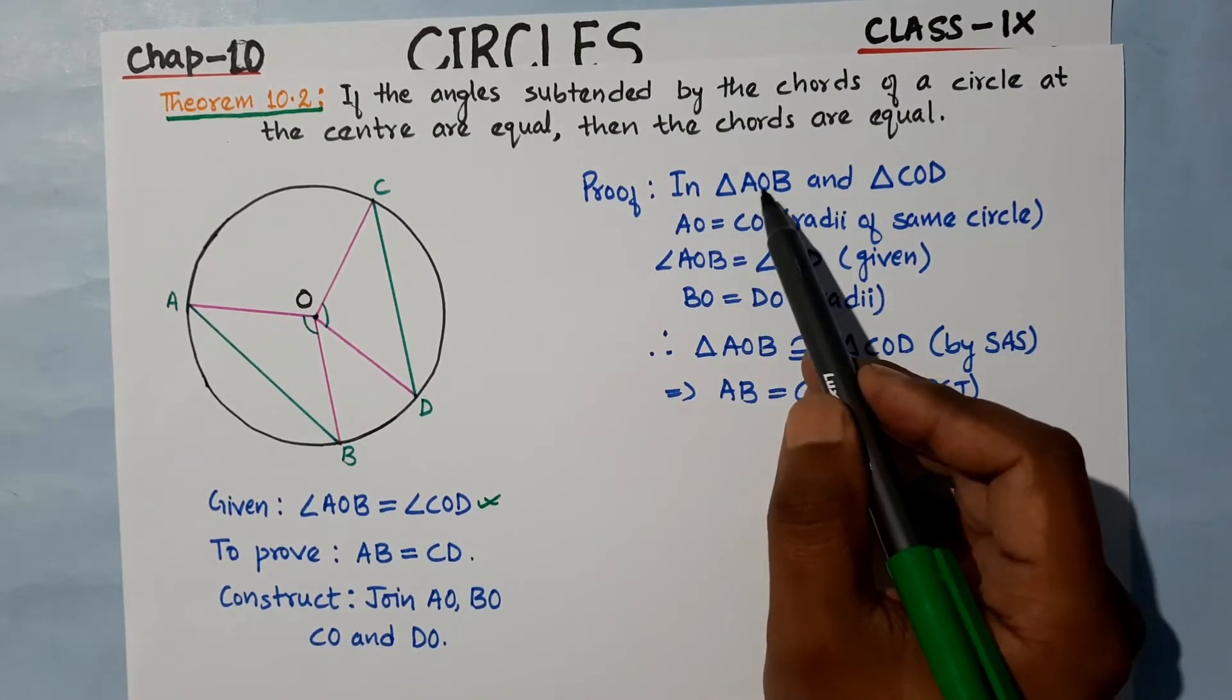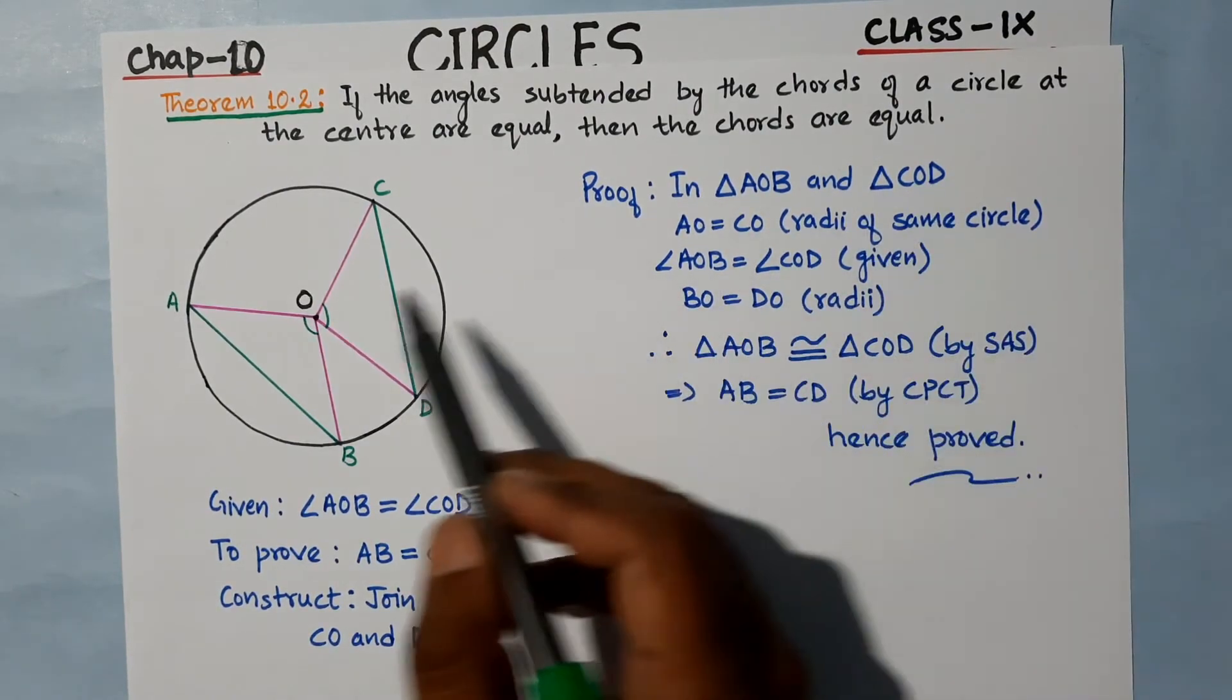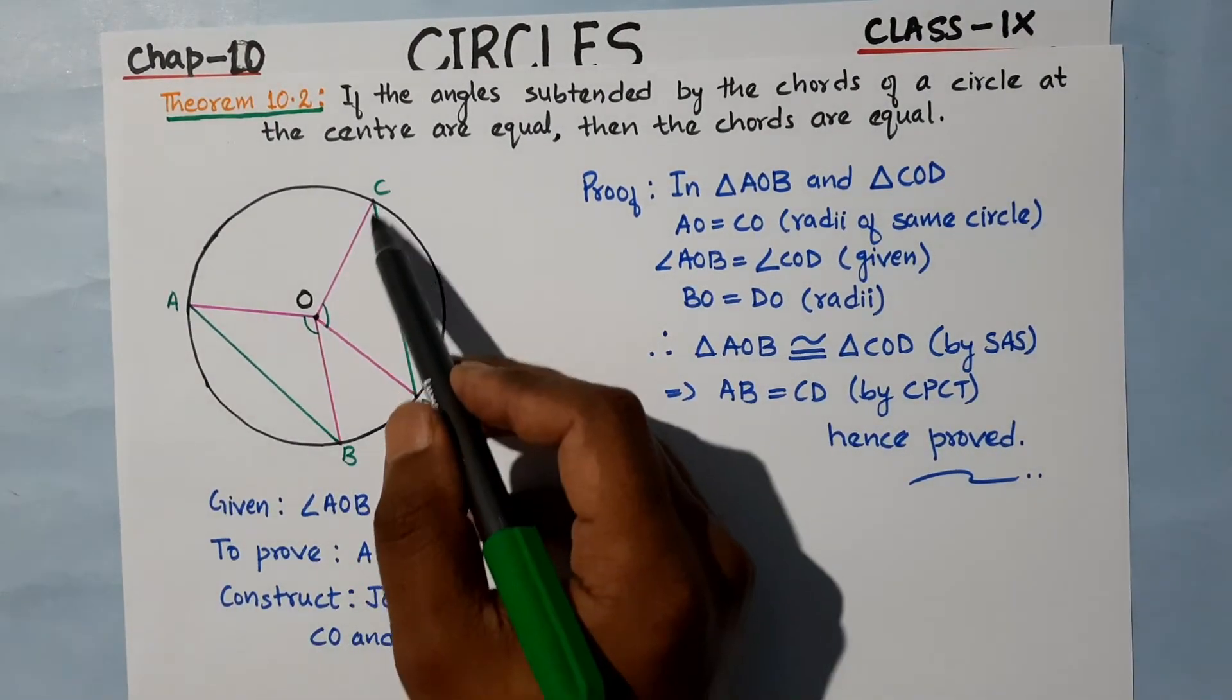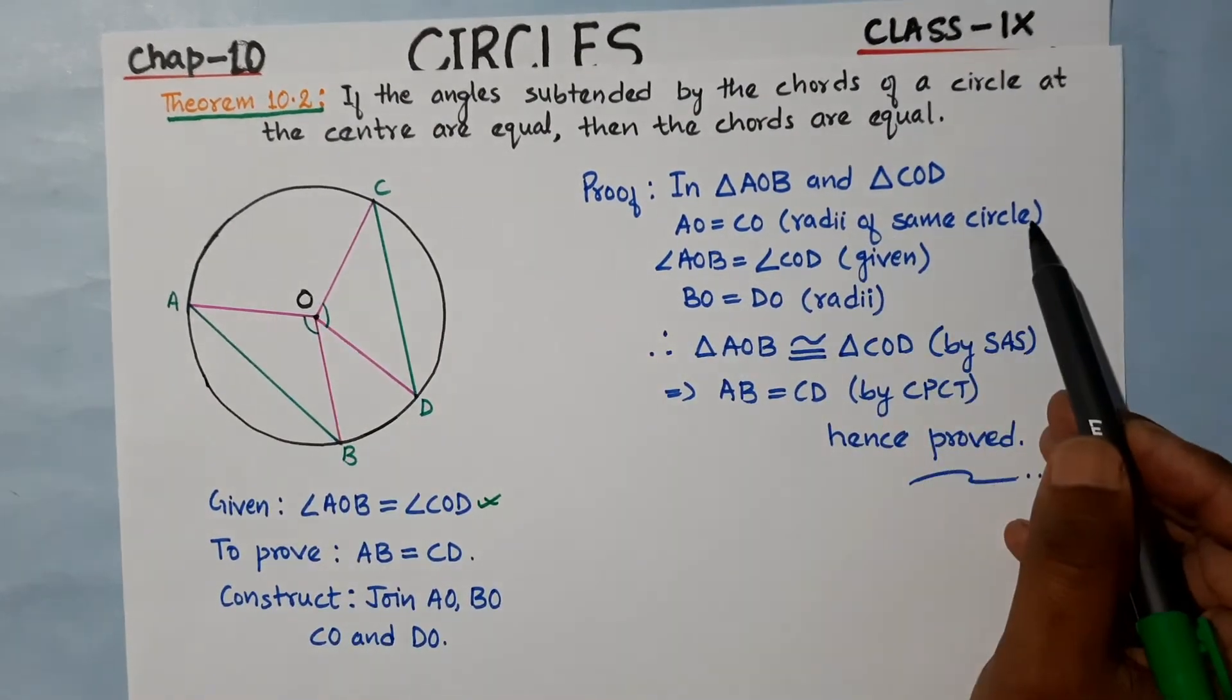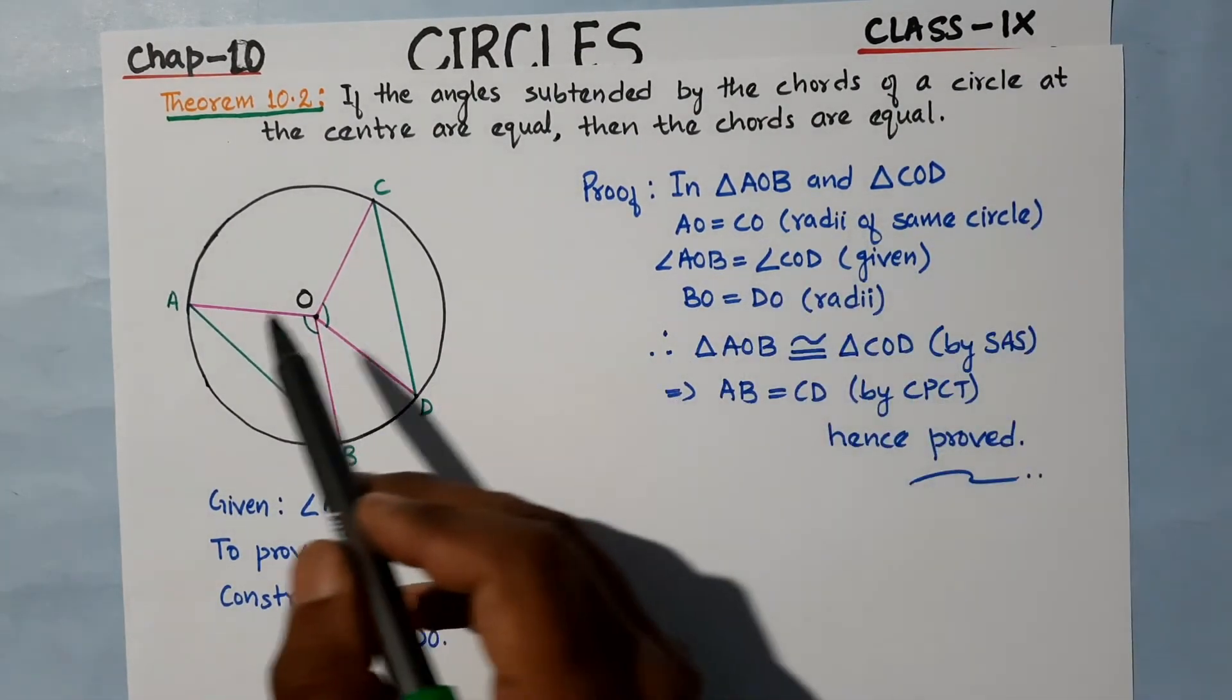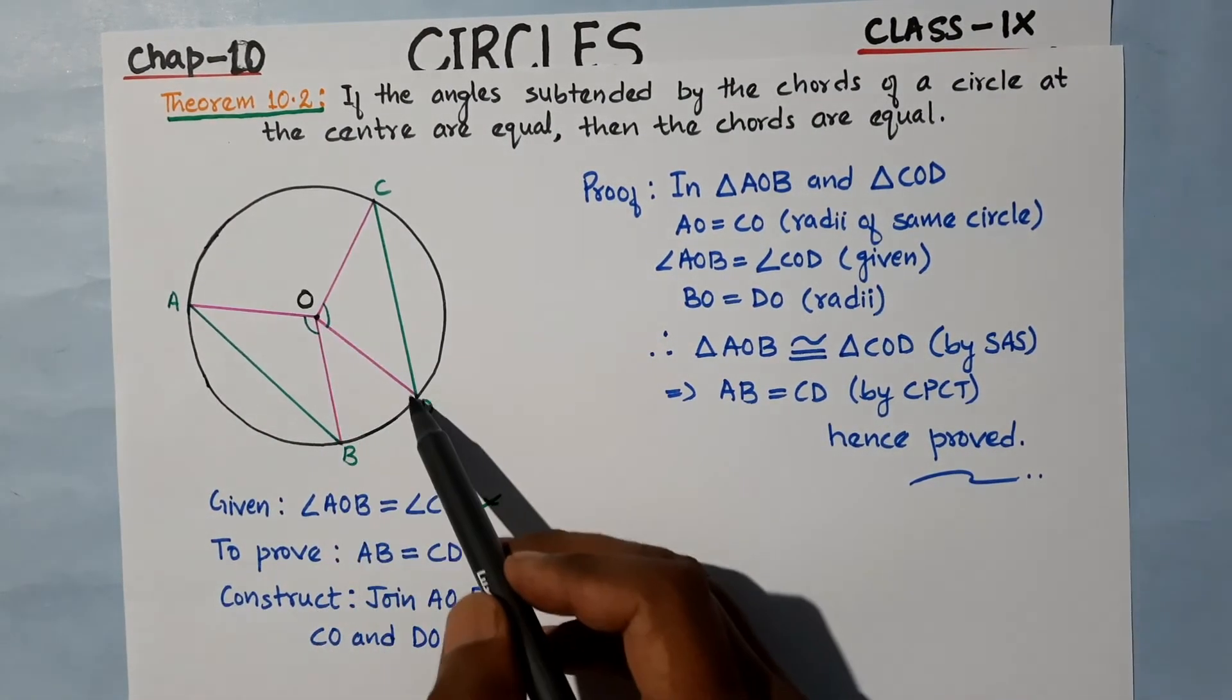First, AO equals CO because both are radii of the same circle. Similarly, second, angle AOB equals angle COD - this is given.